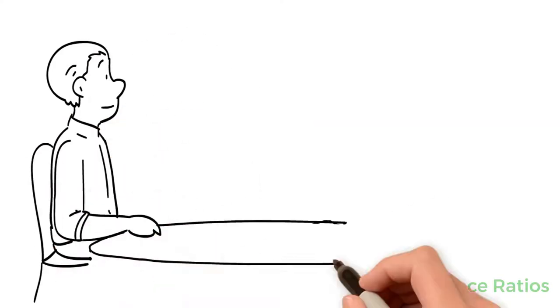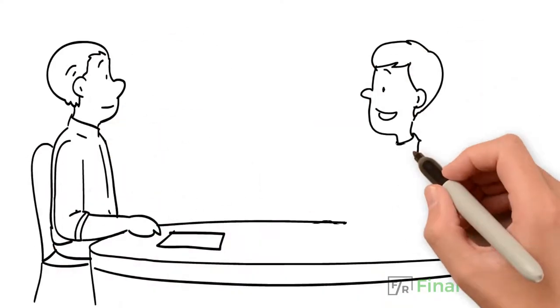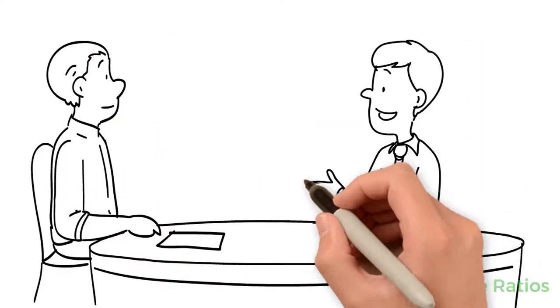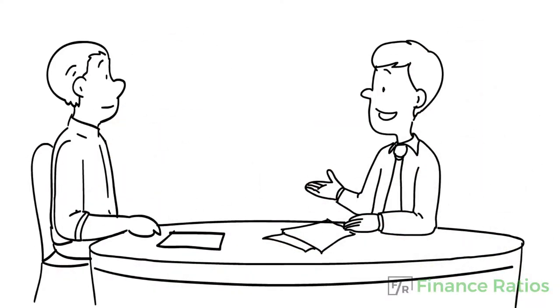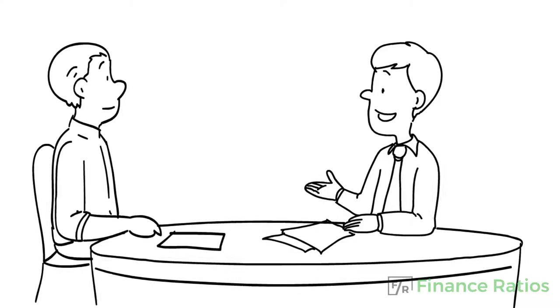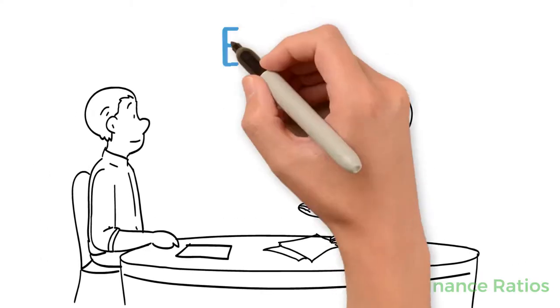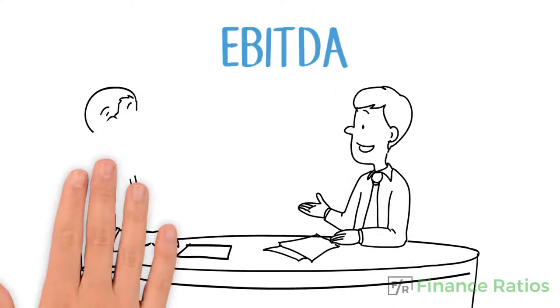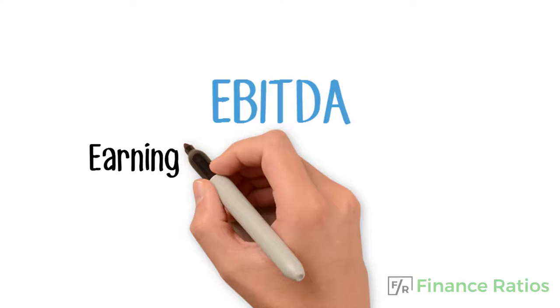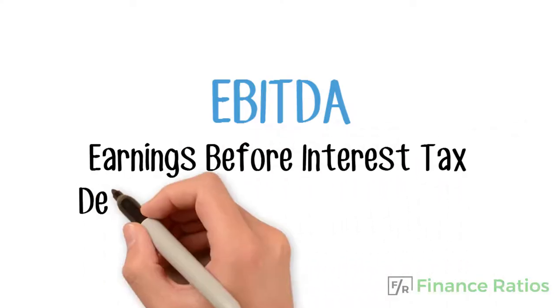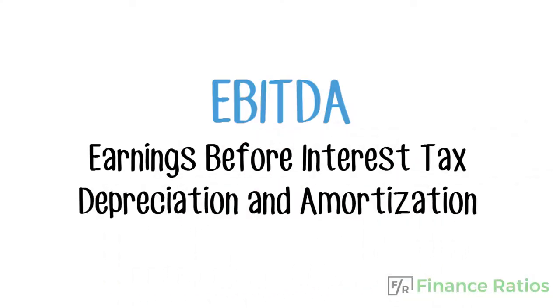Financial analysts use various metrics to analyze the performance of a company. One of them is called EBITDA. EBITDA stands for Earnings Before Interest, Tax, Depreciation, and Amortization.